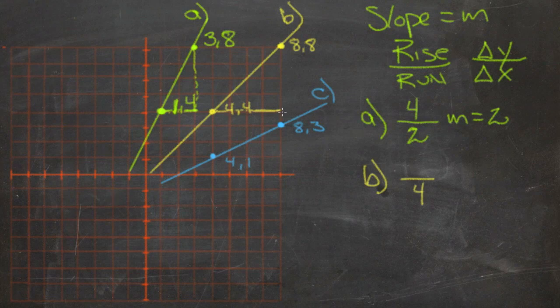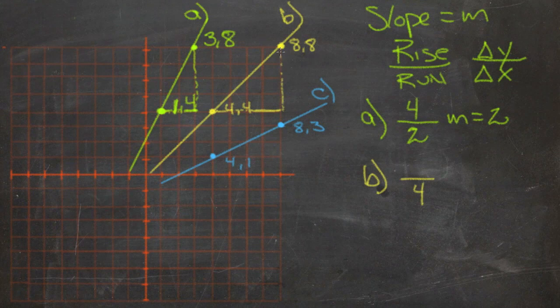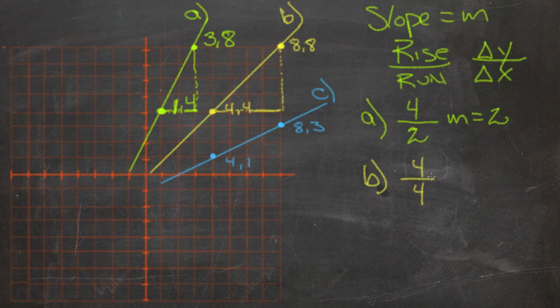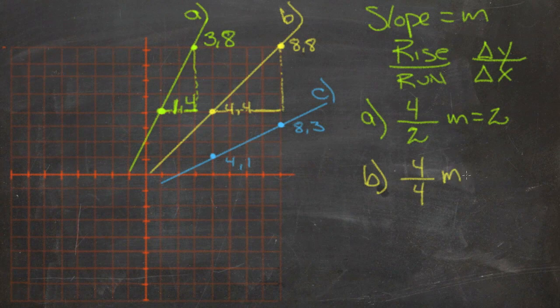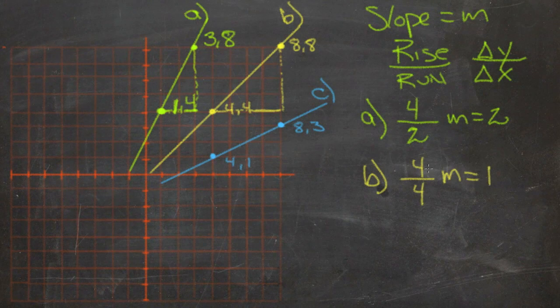And our rise is also 4. Our change in y is 4. So we have 4 over 4, which reduces to give us an M of 1.